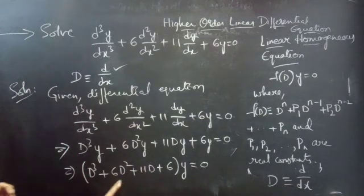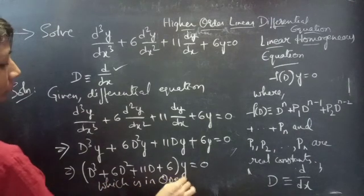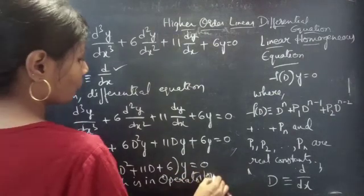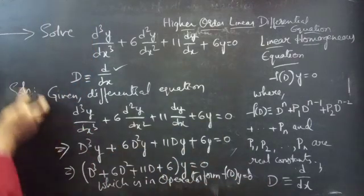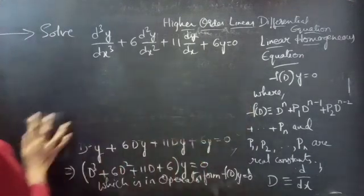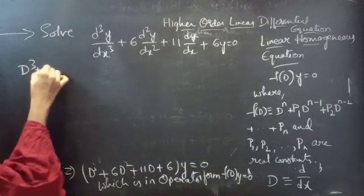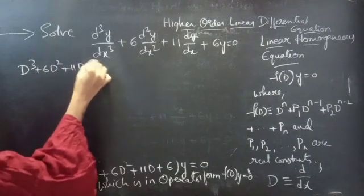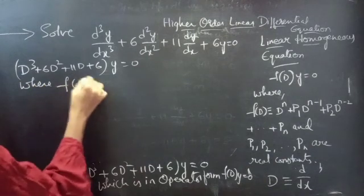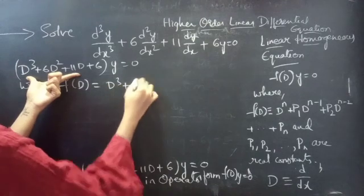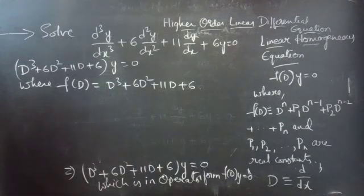This is in operator form: f(D)·y = 0, where f(D) = D³ + 6D² + 11D + 6.